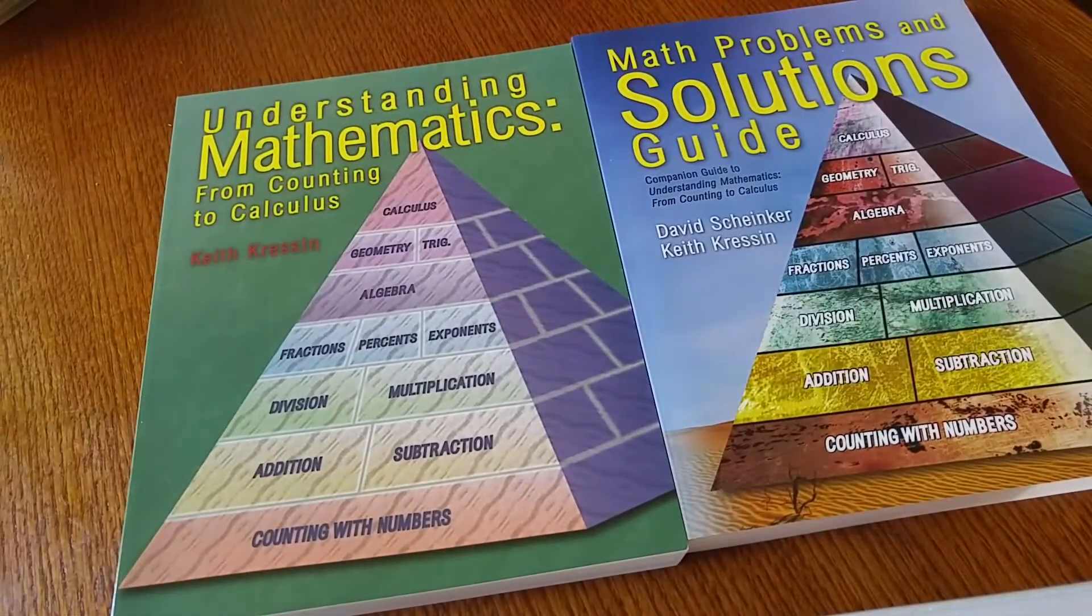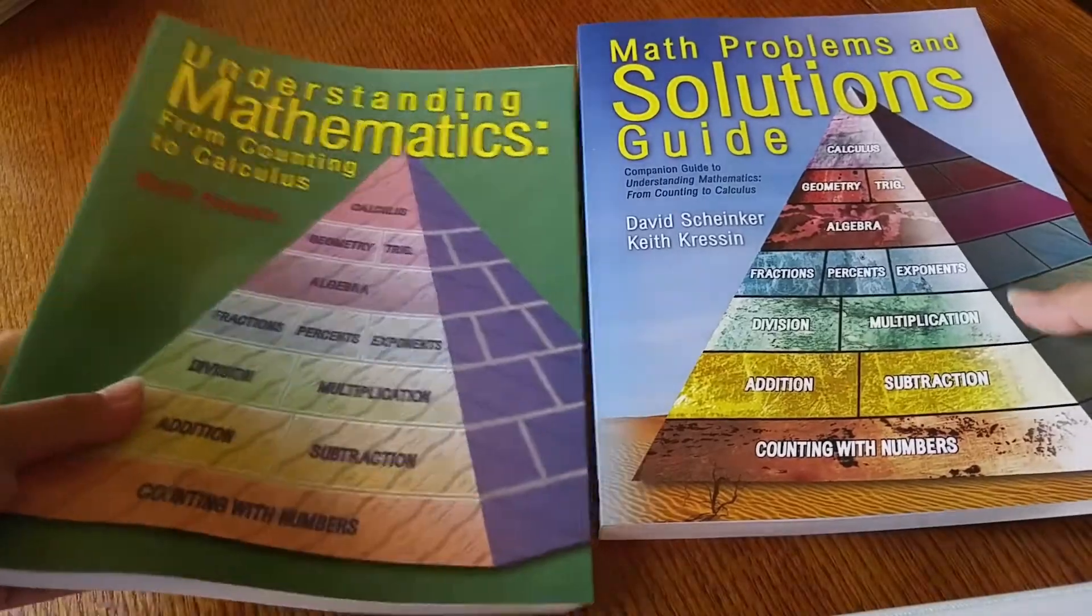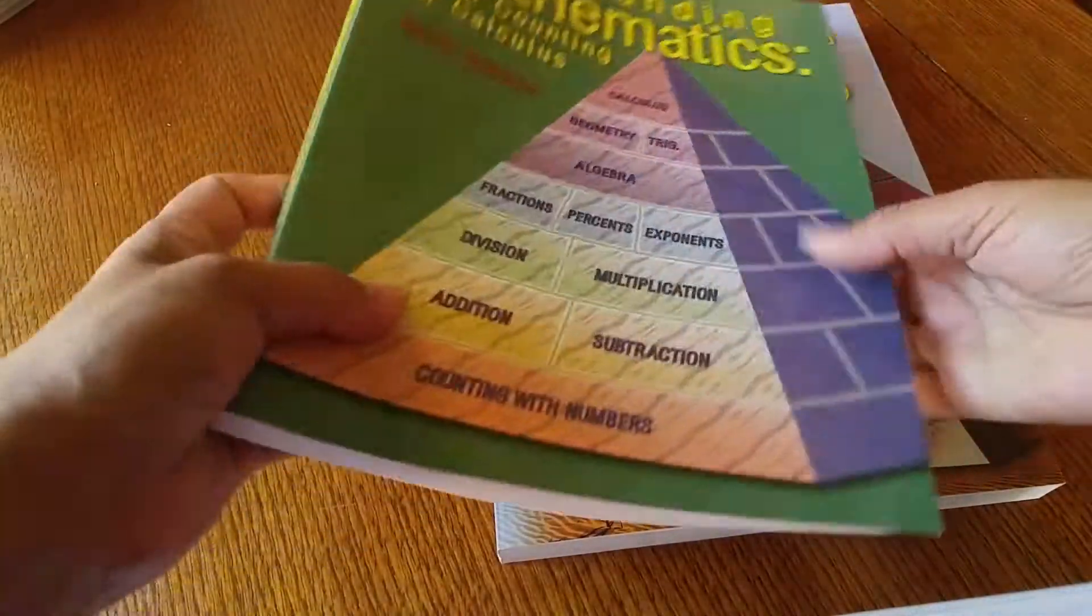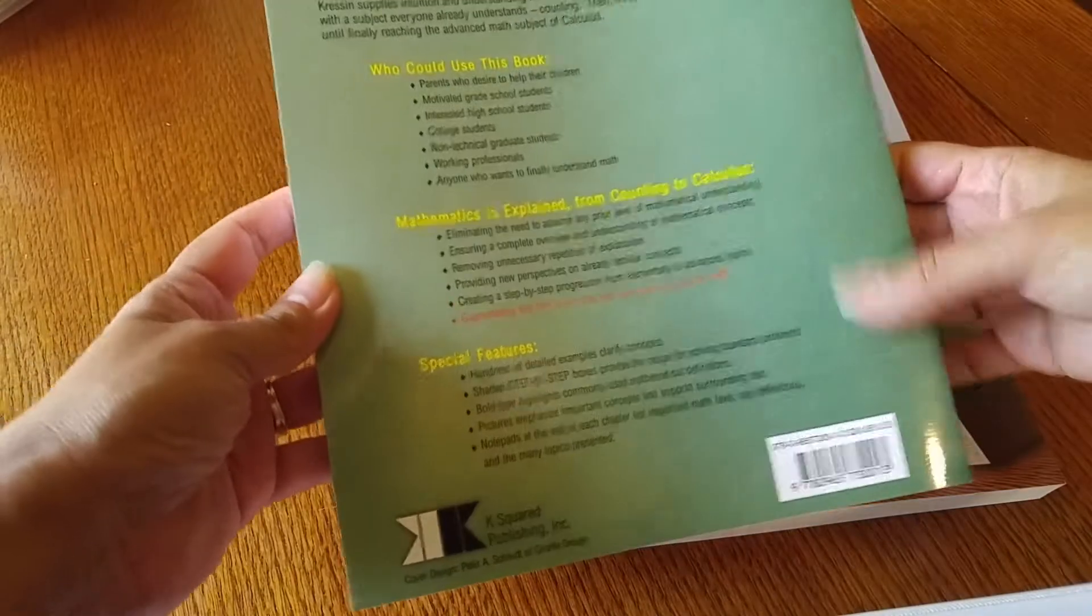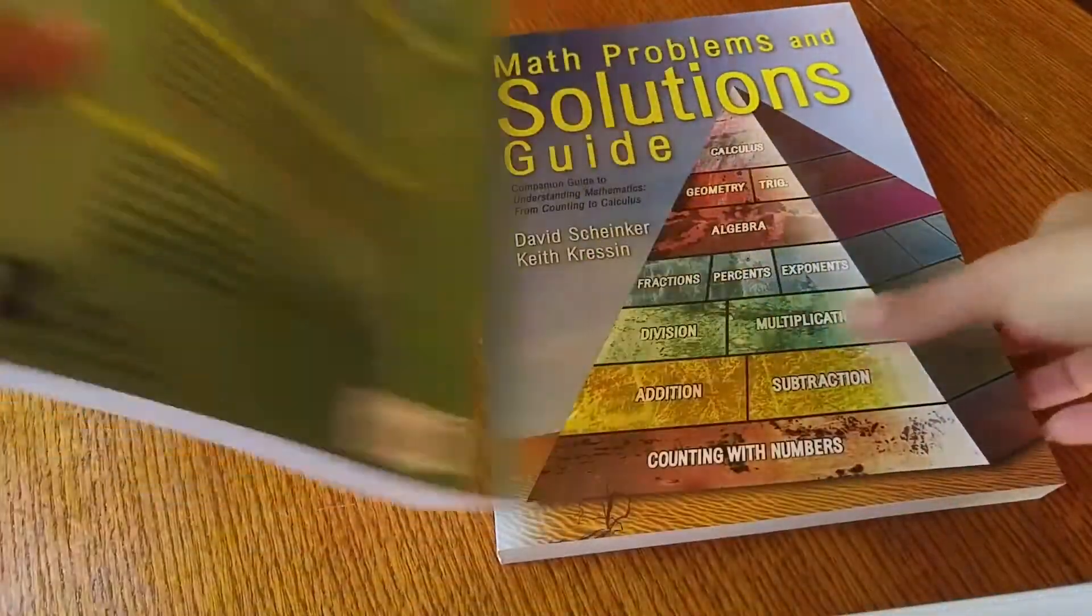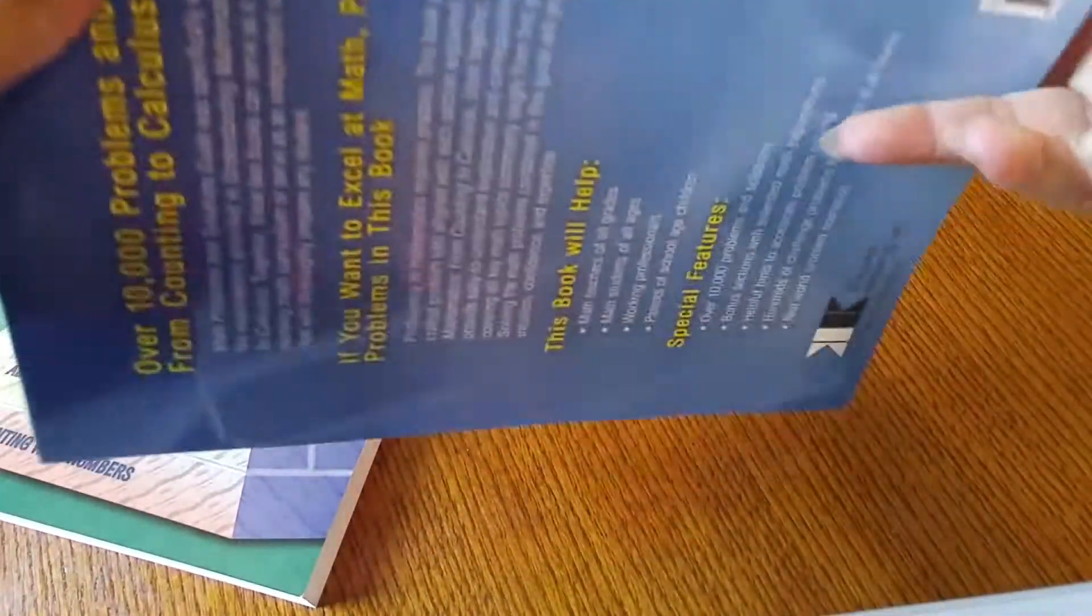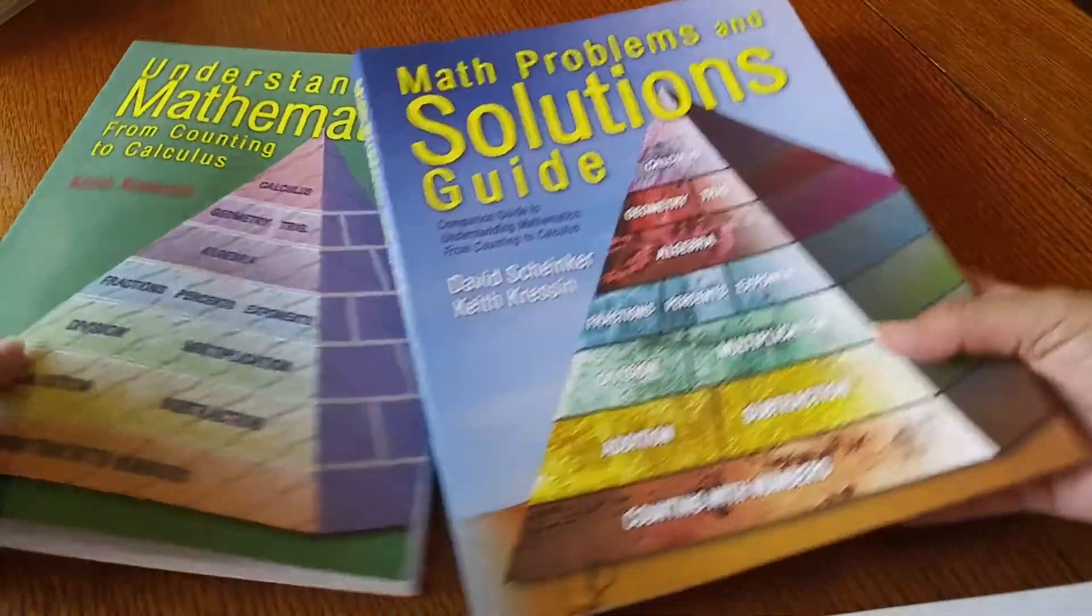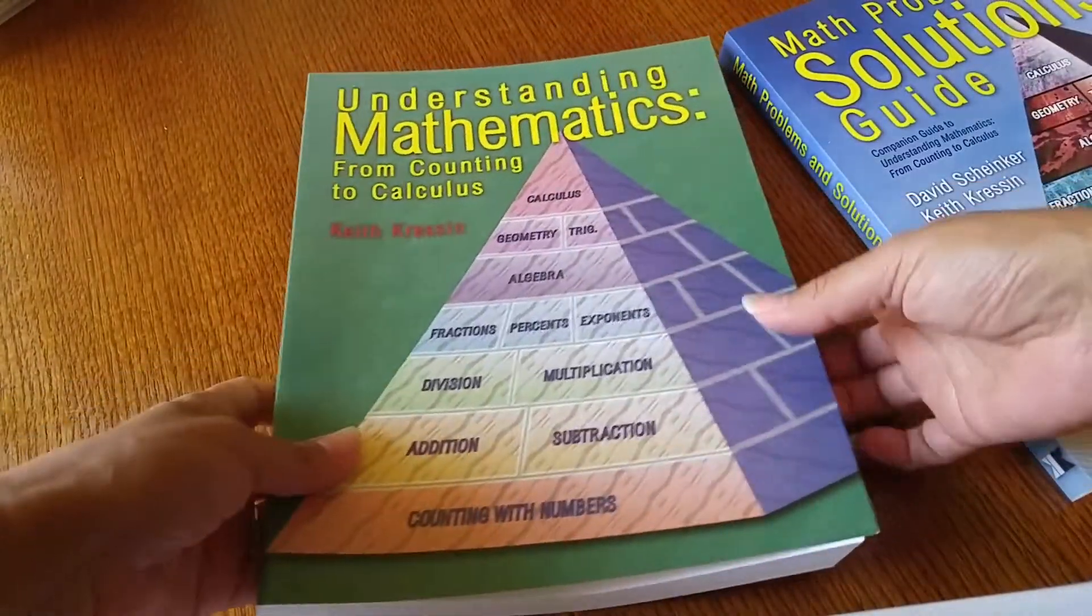If you actually go to the website, and I'll find the website and link that below, you can buy these in PDF format, but as you can see they're pretty thick. I got this one at Rainbow Resource and it was $24.95. Here's the solutions guide and math problems, and this one too was $24.95. If you buy $50 at Rainbow Resource you get free shipping, so that always helps.